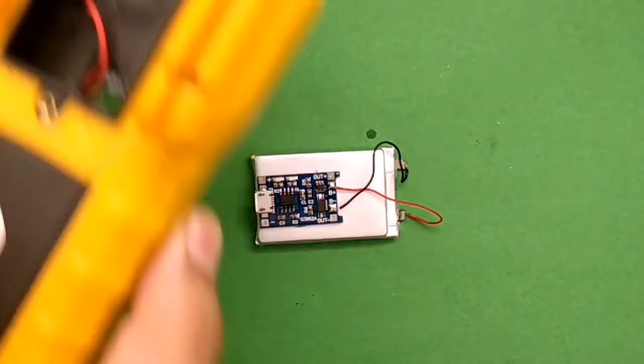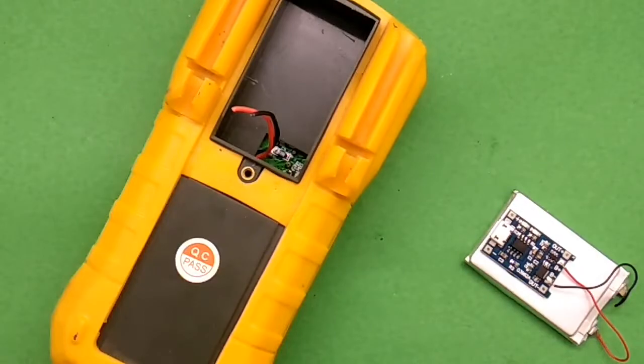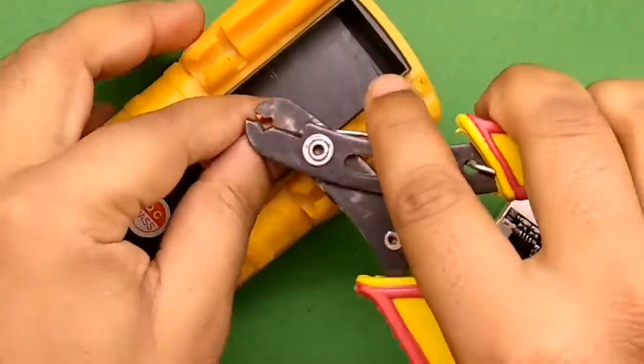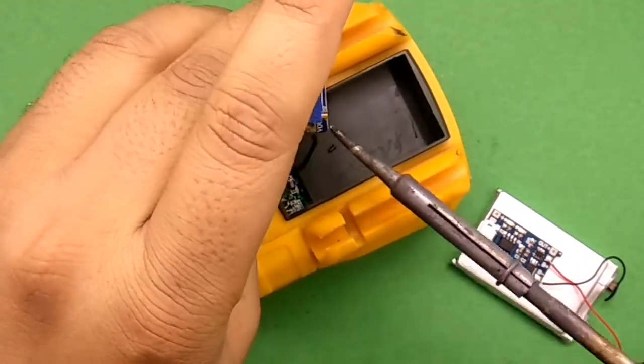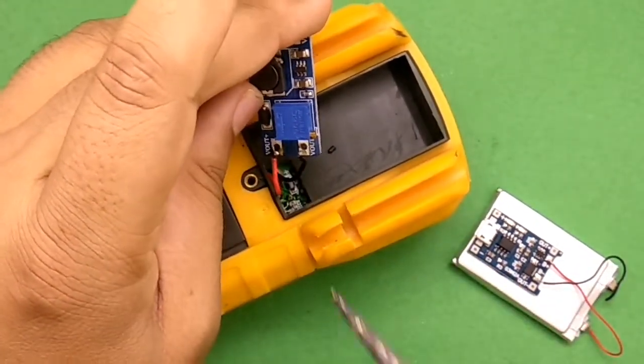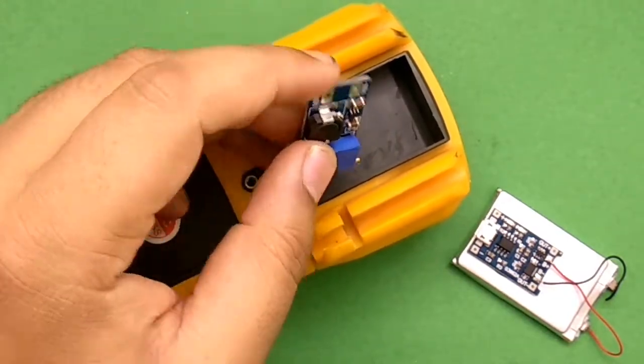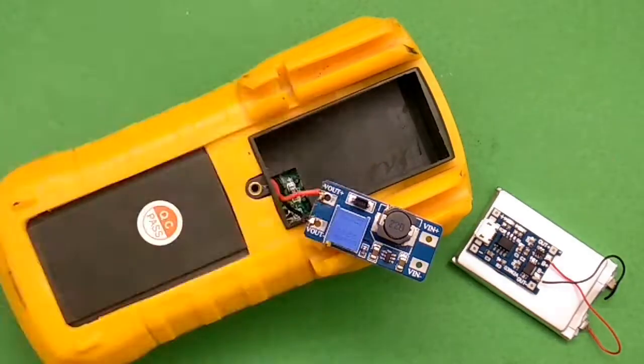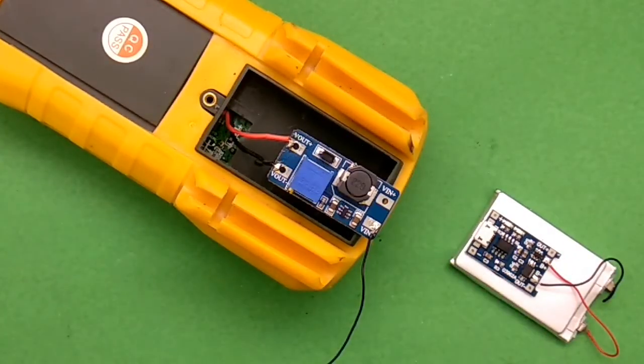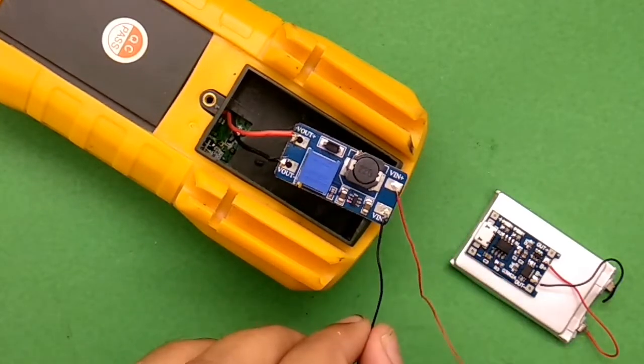After that, we cut this. Now connect these two multimeter input pins to the output of boost converter. And boost converter's V input pin is connected to the battery to the TP4056 output pin.